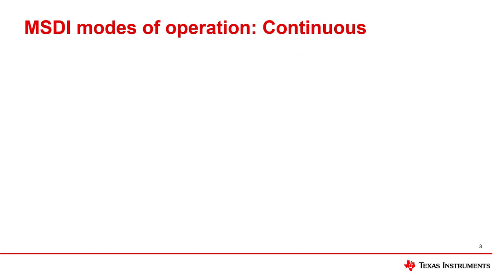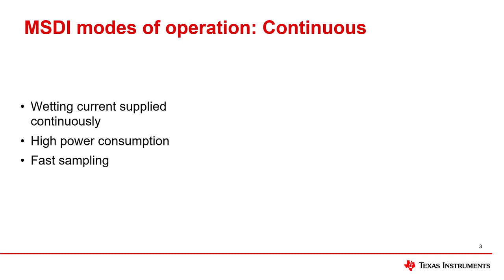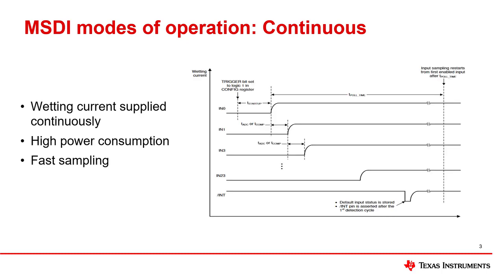In continuous mode, the wetting current is supplied continuously to each enabled input channel and sequentially sampled. The wetting current is not disabled while the other inputs are being sampled and can result in higher power consumption and higher device temperatures if multiple switches are closed for prolonged amounts of time. However, since the wetting current is supplied continuously, the input is always ready to be sampled, which allows for fast sampling time. This graph is an example of the polling sequence in continuous mode.